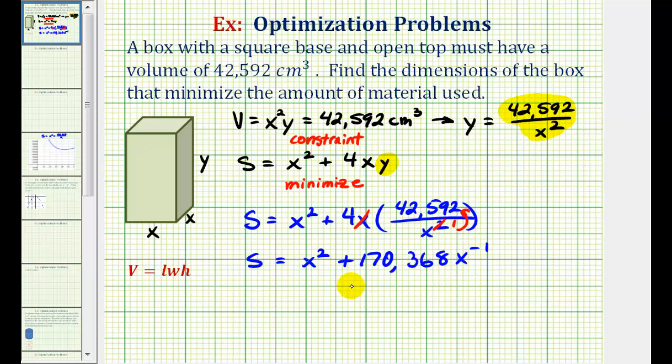Now to minimize this, we'll use calculus techniques. So we'll find the first derivative, and determine where it's undefined or equal to zero to find our critical numbers. So s prime is going to be equal to two x. Here we're going to multiply it by negative one. So we'll have negative 170,368 subtract one from the exponent. That will give us x to the power of negative two.